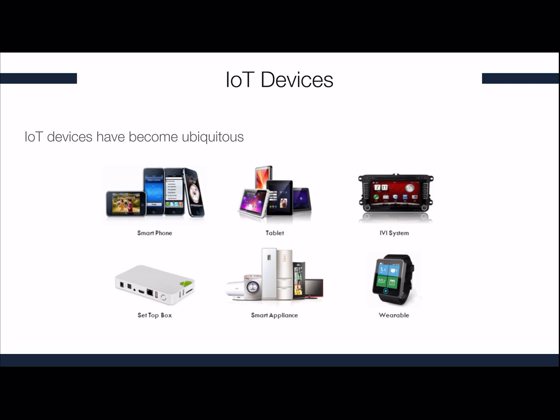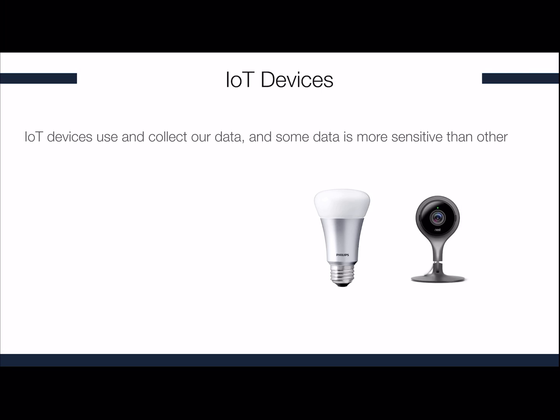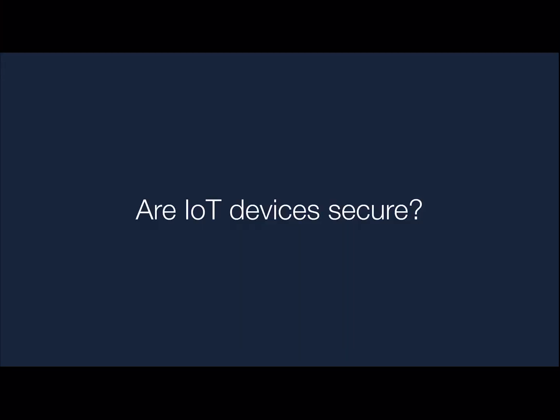IoT devices are everywhere and they span from smartphones to wearables such as smartwatches and so forth. A study conducted in 2019 on 16 million households shows that more than 70% of homes in North America have an IoT device. IoT devices use and collect our data, and some data is more sensitive than other. Therefore we wonder: are IoT devices secure?